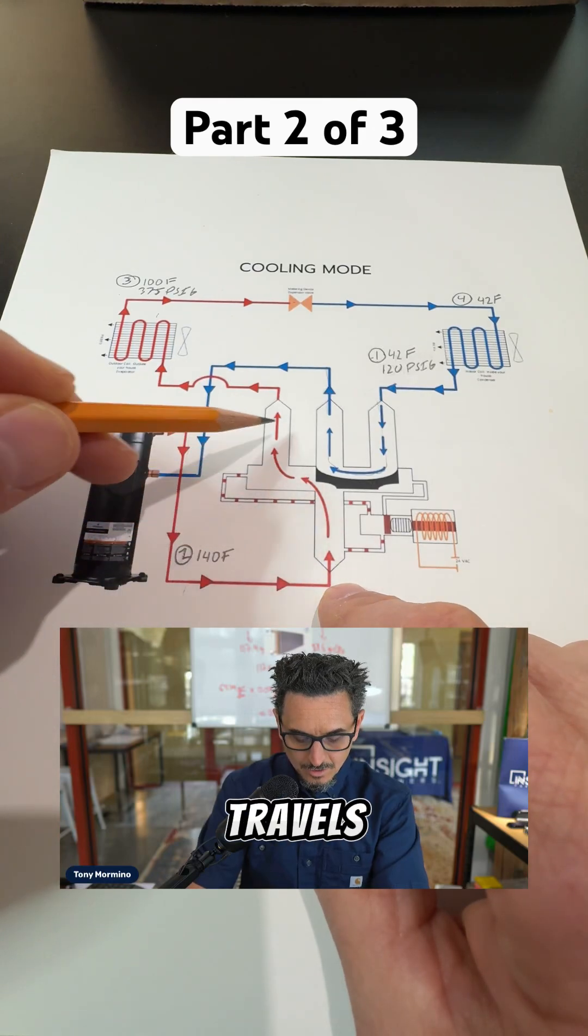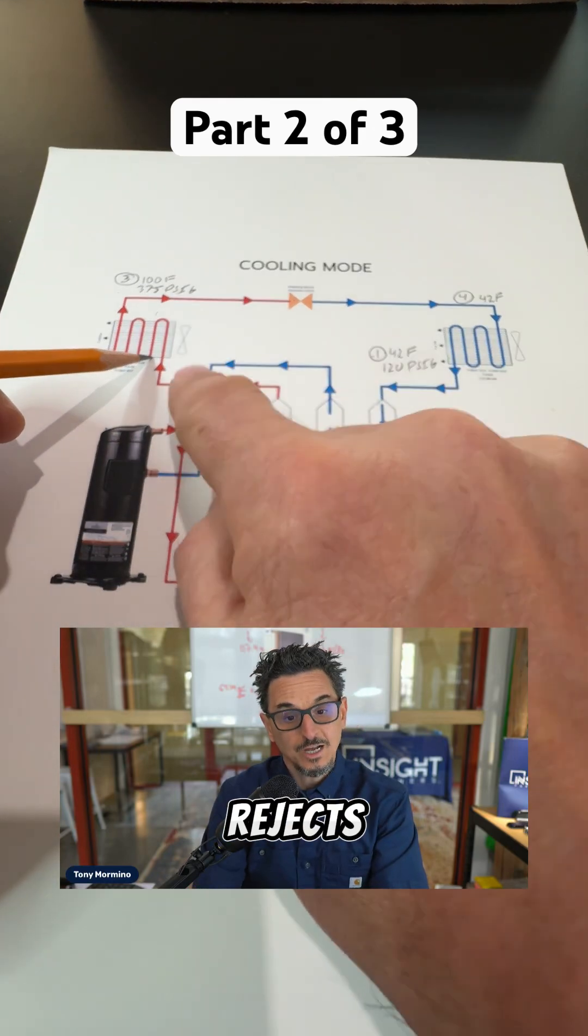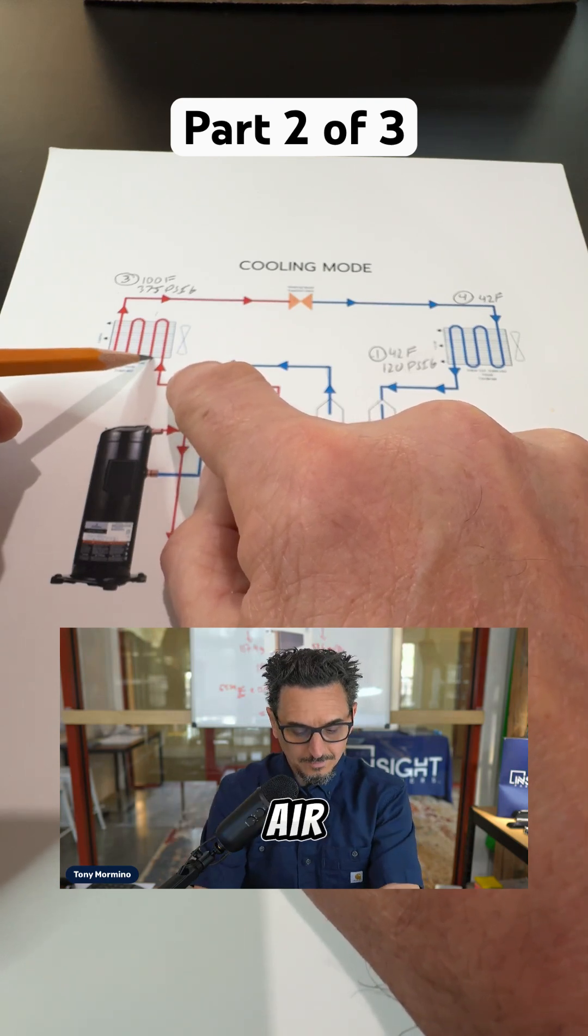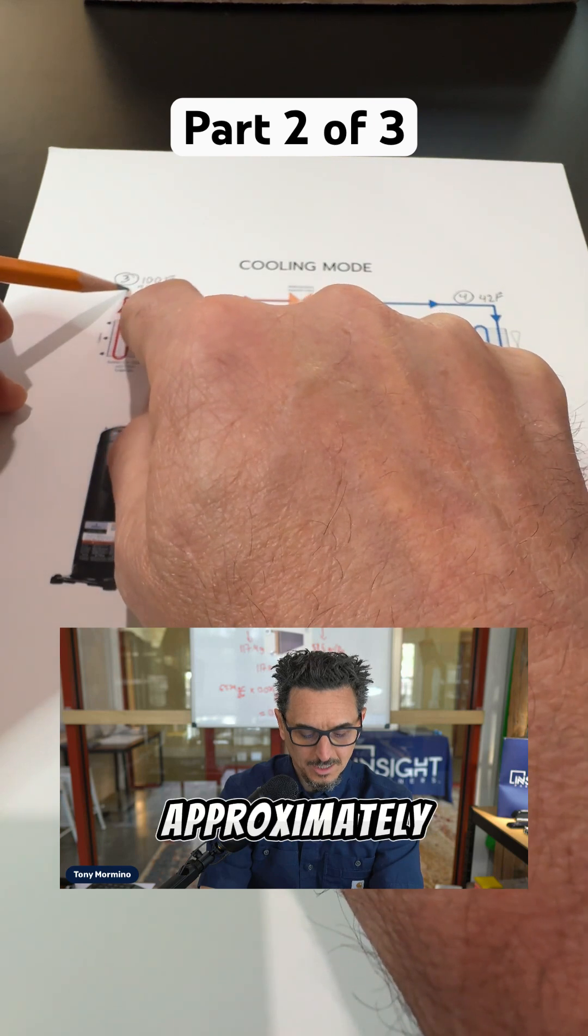Discharge from the compressor travels to the condenser where it rejects the heat of the refrigerant to the relatively cool outdoor air, lowering the temperature to approximately 100 degrees.